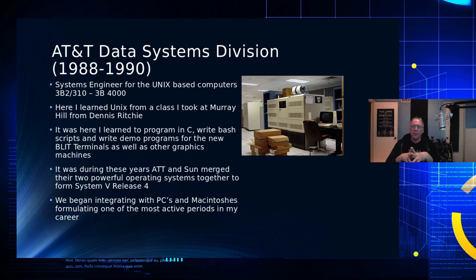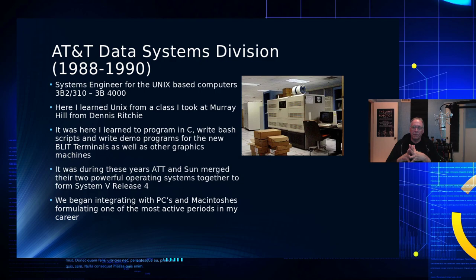I was out there for about four weeks. During that time I learned the internals of Unix, learned how to work with utilities, and also got started into C. I learned C and how to write bash scripts and how to develop demo programs for the new terminals they called Blit terminals — the 630 was the official commercial name — which had a mouse and a graphical user interface hooked into a serial line.